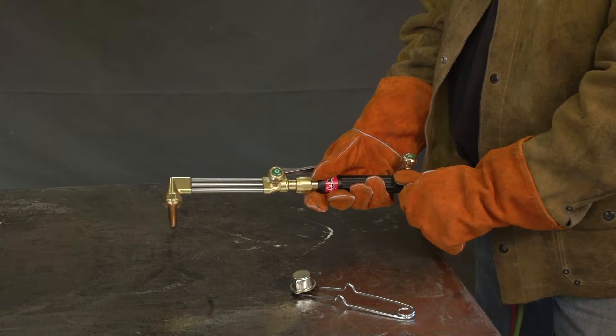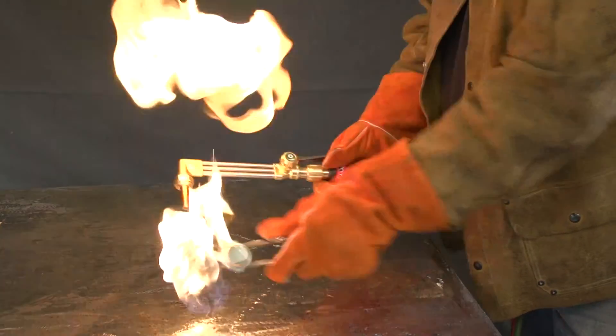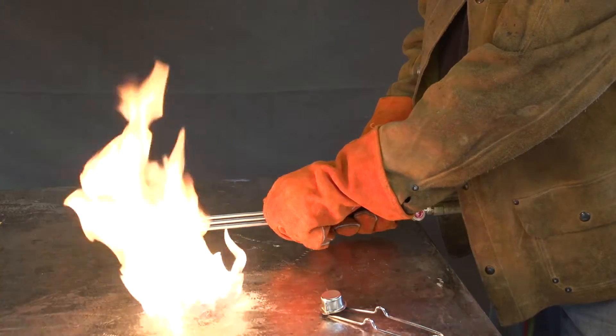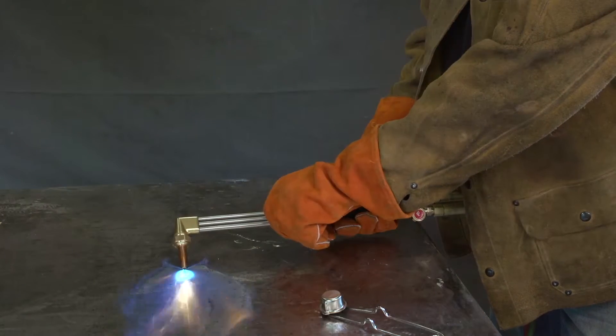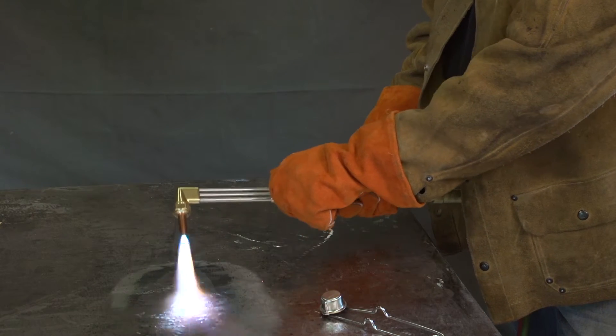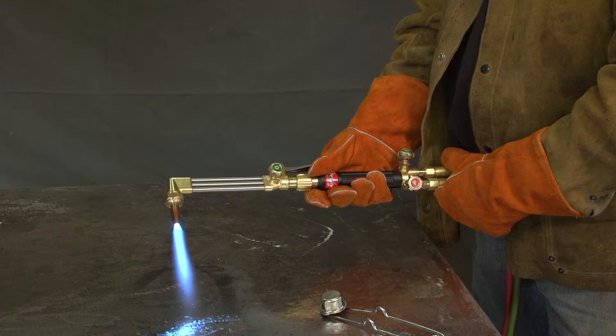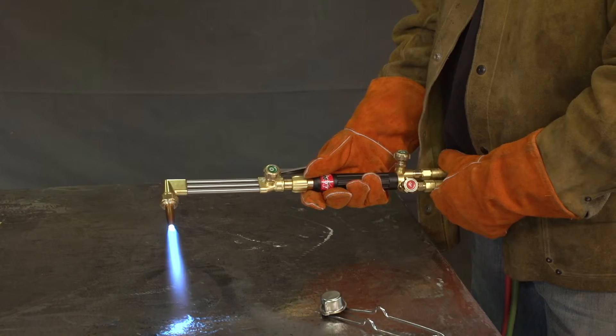Technique 2. Turn the fuel valve one-quarter to one-half turn and light. Place the tip on the workpiece at about a 45-degree angle. Open the oxygen preheat valve one-quarter to one-half turn until the flame snaps into place. Then, walk up the flame as normal.